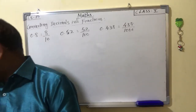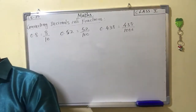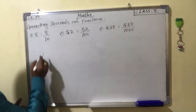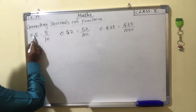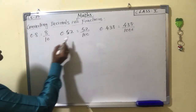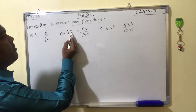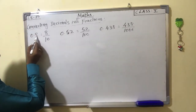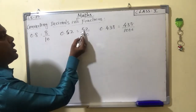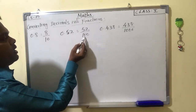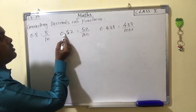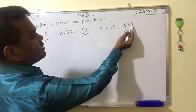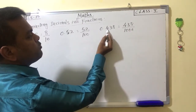The digits of the numerator of the fraction are the same as the digits of the decimal number. Look at the numerator 8 — here also 8. Numerator 52, decimal number 0.52. Numerator 438, decimal number 0.438.